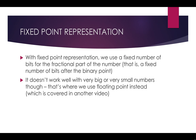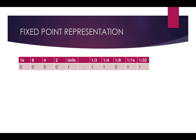With fixed point representation we use a fixed number of bits for the fractional part of the number — a fixed number of bits after the binary point. But it doesn't work very well with really large or really small numbers, so that's where we use the floating point method instead — 32-bit single precision floating point or 64-bit double precision floating point. That's covered in another video. Let's have a look at an example.